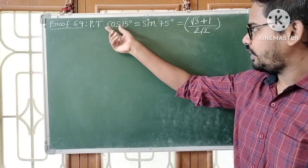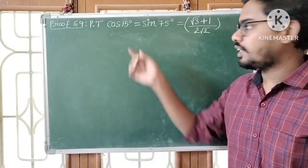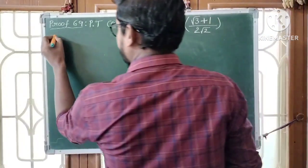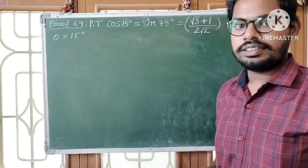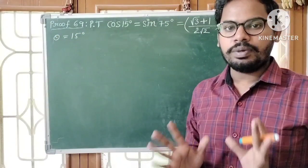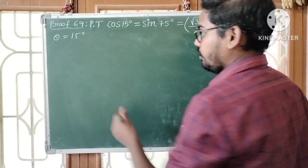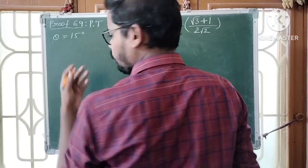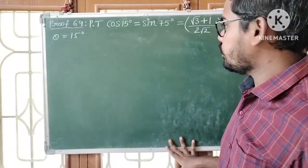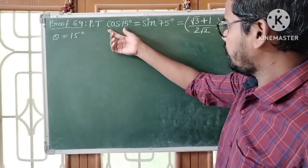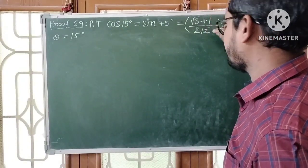We need the value of cos 15 degrees. Here theta is equal to 15 degrees. We apply the compound angles concept. The compound angles formulas include cos A plus B, cos A minus B, sin A plus B, sin A minus B. Here I am going to prove cos 15 degrees is equal to root 3 plus 1 by 2 root 2.